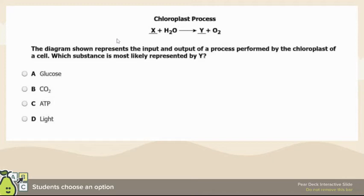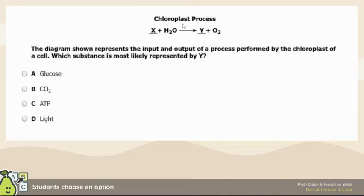This should look familiar — right away think chloroplast, plants, photosynthesis. We're looking for the substance represented by Y. Light goes into photosynthesis, carbon dioxide is X. Photosynthesis produces glucose and oxygen, which is then used in cellular respiration to produce ATP. The correct answer is glucose.